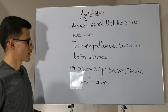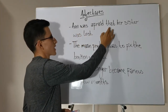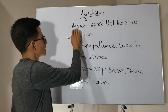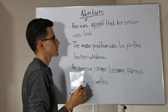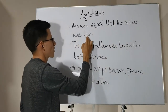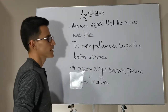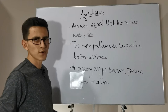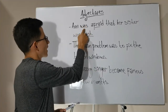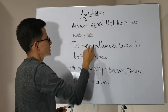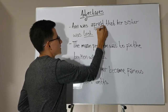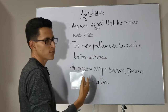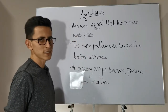Let's start with the first one: Ann was afraid that her sister was lost. First, let's try to find the adjectives. Ann was afraid — here we have the first one. That her sister was lost — here we have the other adjective. In this sentence we have two adjectives. Now let's try to identify if they are attributive or predicative. In this case we have a linking verb, so we can say that afraid is a predicative adjective. And in the clause that her sister was lost, here we have again another linking verb, so it is also a predicative adjective.